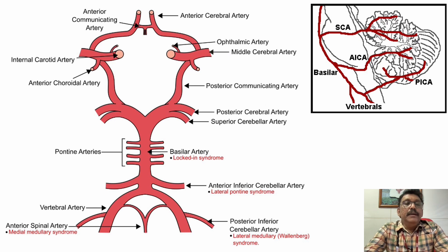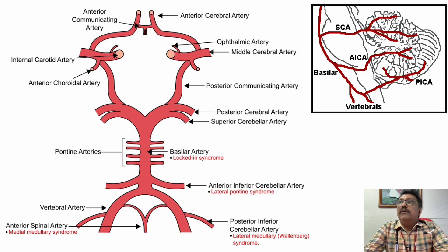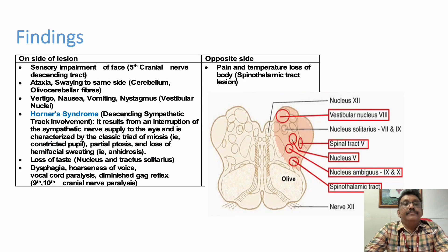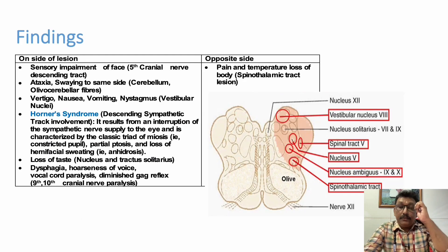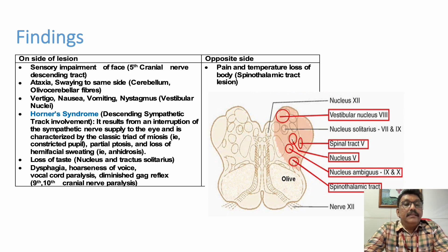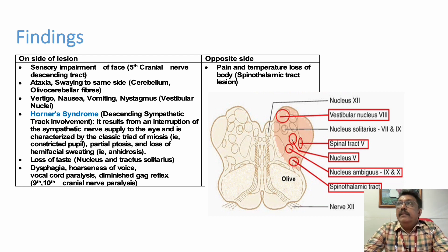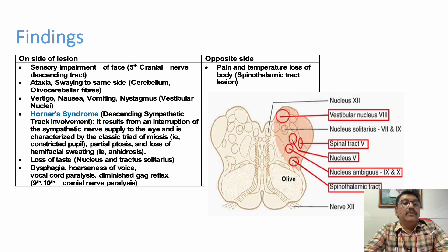We will not be discussing medial medullary syndrome, which can have weakness and other complications. But in lateral medullary syndrome, there is no actual weakness for the limbs. On the side of the lesion — suppose it is right-sided lateral medullary syndrome — you can have sensory impairment of the face, because the descending tract of the fifth cranial nerve is involved. So facial sensory loss can be present.